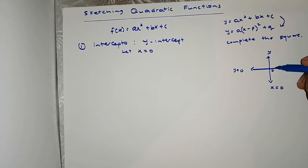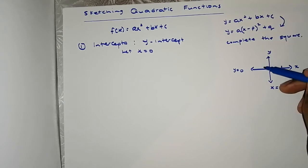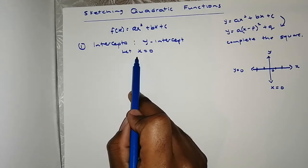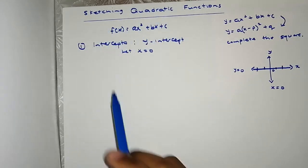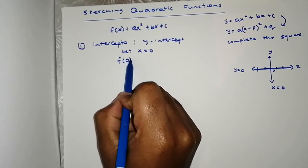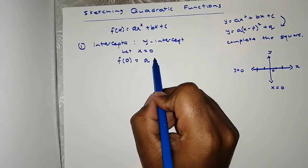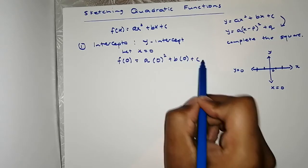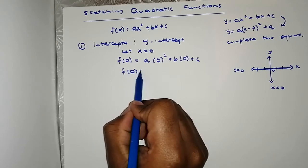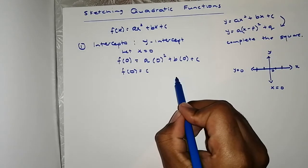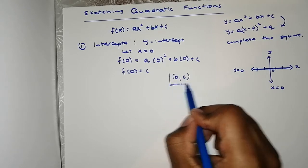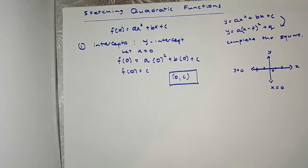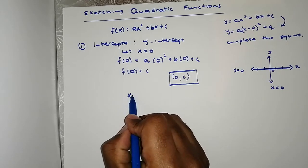So you might have x equals one, negative one, negative two, but on the y-axis x equals zero, so that's why you let x equal to zero. If your function is in standard form it's easier because f(0) = a(0)² + b(0) + c, so f(0) = c. Your y-intercept will be the point (0, c), or you can say the y-intercept is the value of y when x equals zero.